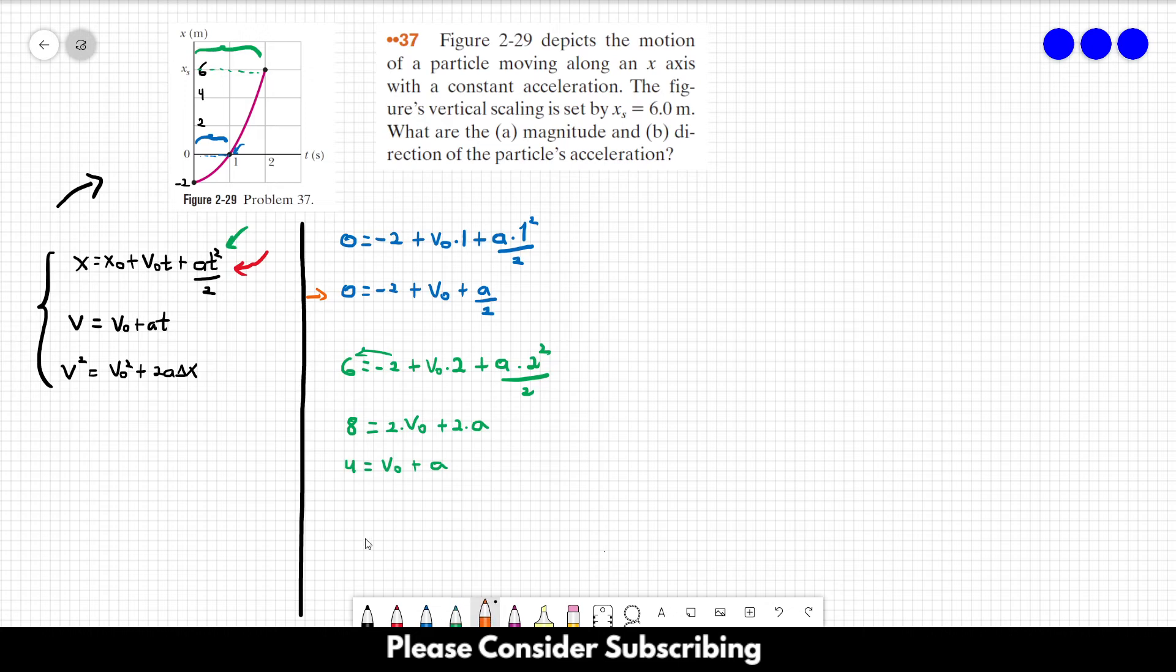So those are the two equations that we have to solve this problem. Since we only have two unknowns, v_0 and a, and we have two different equations, we can find a solution.